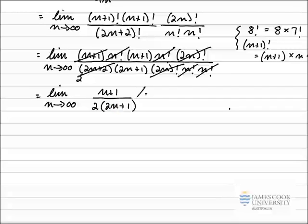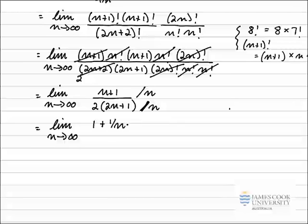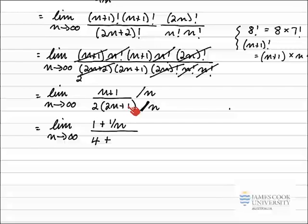So I'm going to divide the top line by n and the bottom line by n as well. Simplifying — still writing the limit as n approaches infinity — on the top line, n plus 1 divided by n gives 1 plus 1/n. On the bottom, bringing the 2 inside: 2 times 2n divided by n gives 4, and 2 times 1 divided by n gives 2/n. So the bottom becomes 4 plus 2/n.